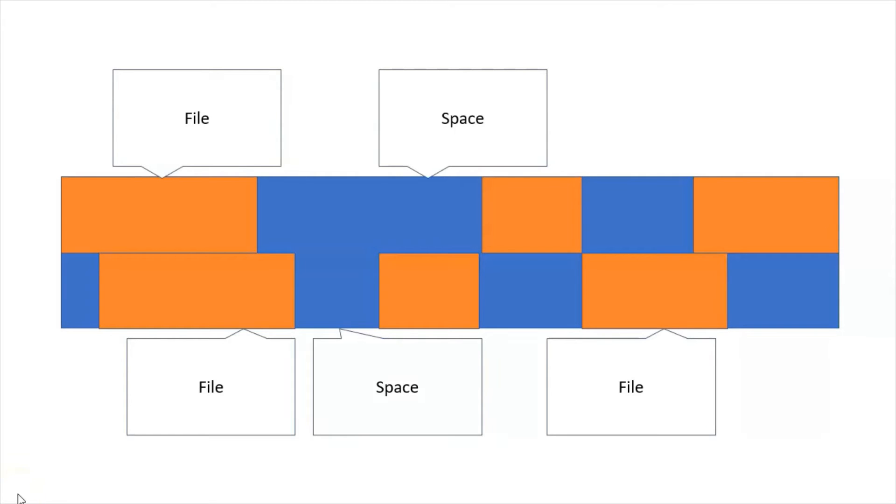Imagine this is a disk. As we save stuff on the disk, the computer saves it in different parts. Here are different files being saved to the disk, saved in different areas. The orange represents the files and the blue represents the rest of the disk — the empty space. We can see it's not the most efficient use of space.